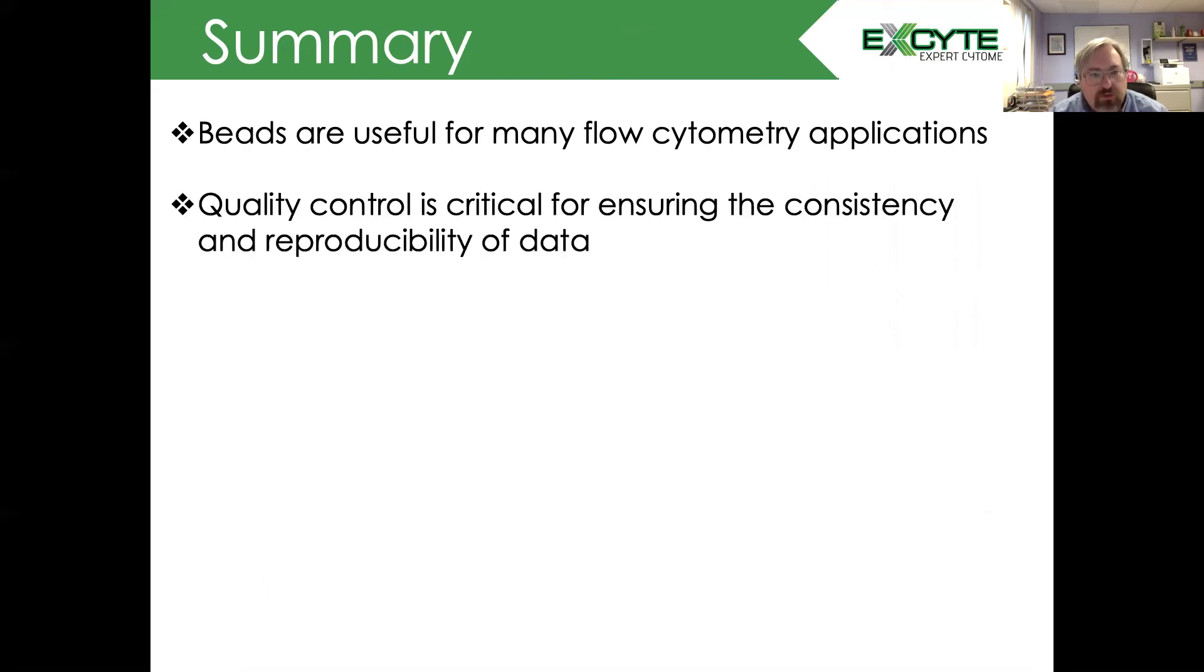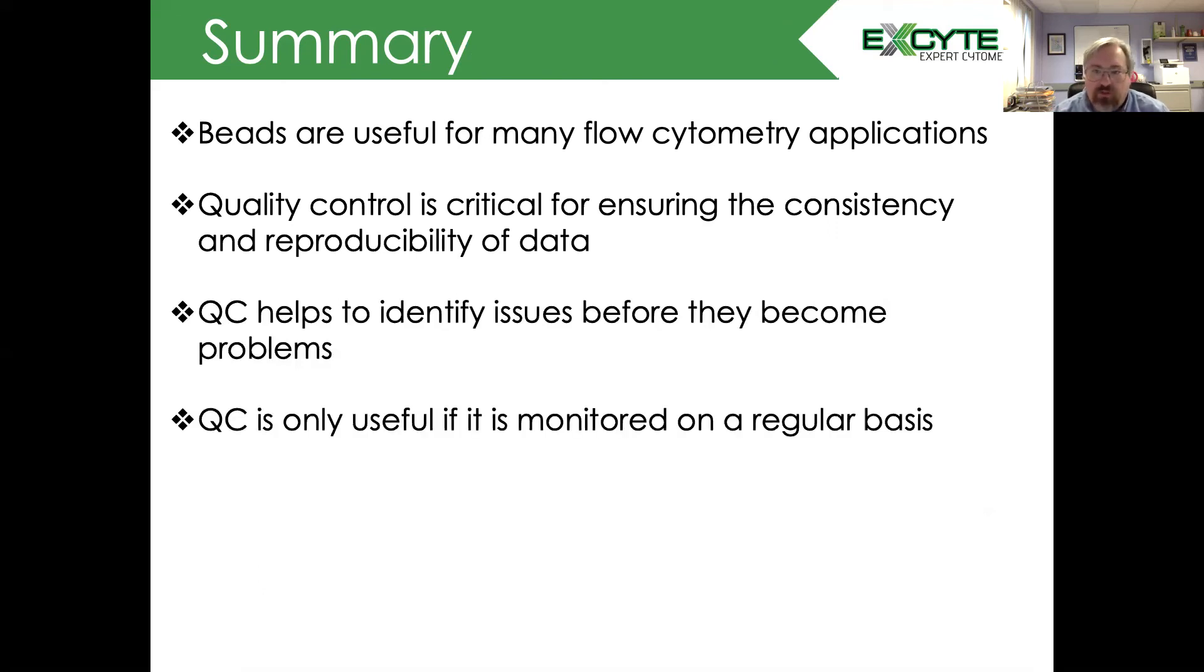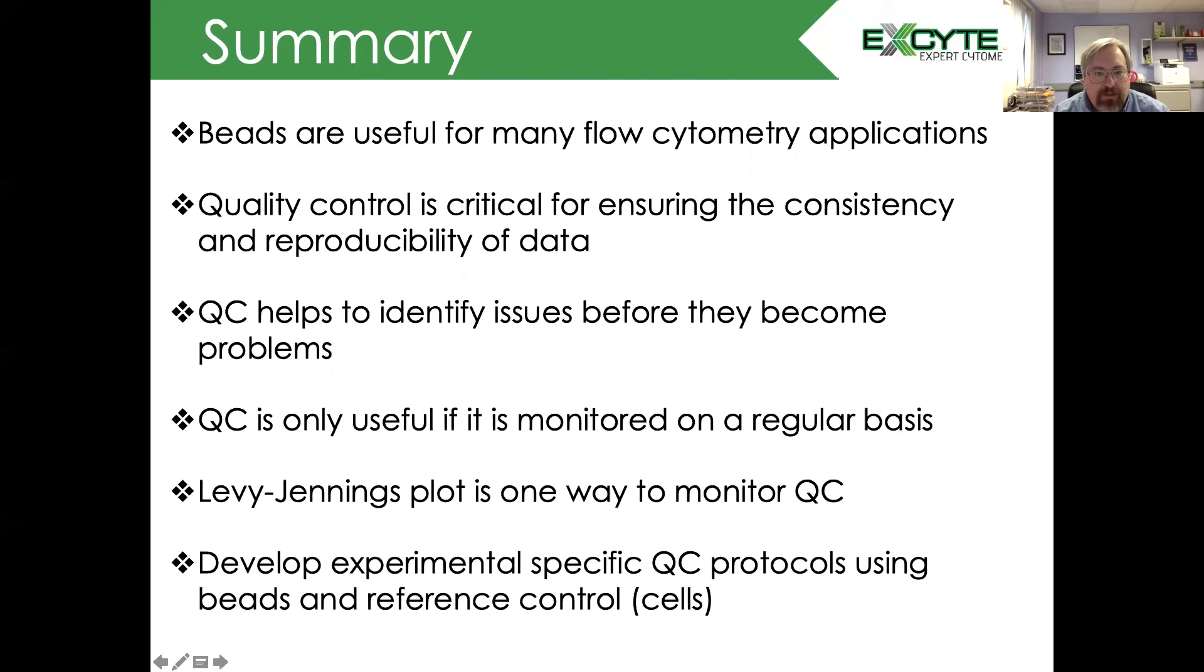Quality control is critical for ensuring consistency and reproducibility of data. Quality control helps identify issues before they become problems. Quality control is only useful if it is monitored on a regular basis. The Levy Jennings plot is one way to monitor quality control. And importantly, develop an experimental specific QC protocol using beads and reference controls, such as cells.